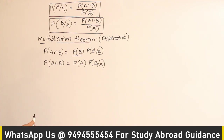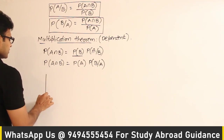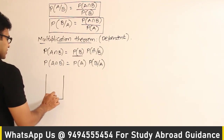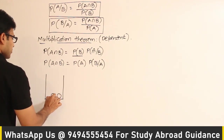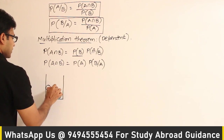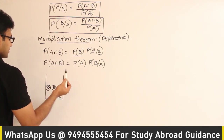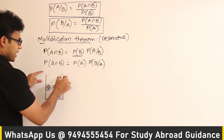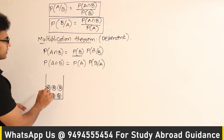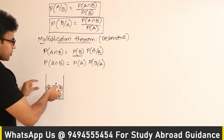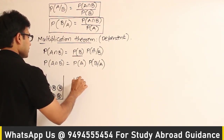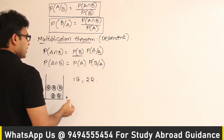Let me explain dependent events with a classic example. Let's say we have a box containing two green balls and three red balls. I want to draw two balls one after the other without replacement. I want to draw a green ball first and a red ball second. So G1 means in the first draw I get a green ball, and R2 means in the second draw I get a red ball.